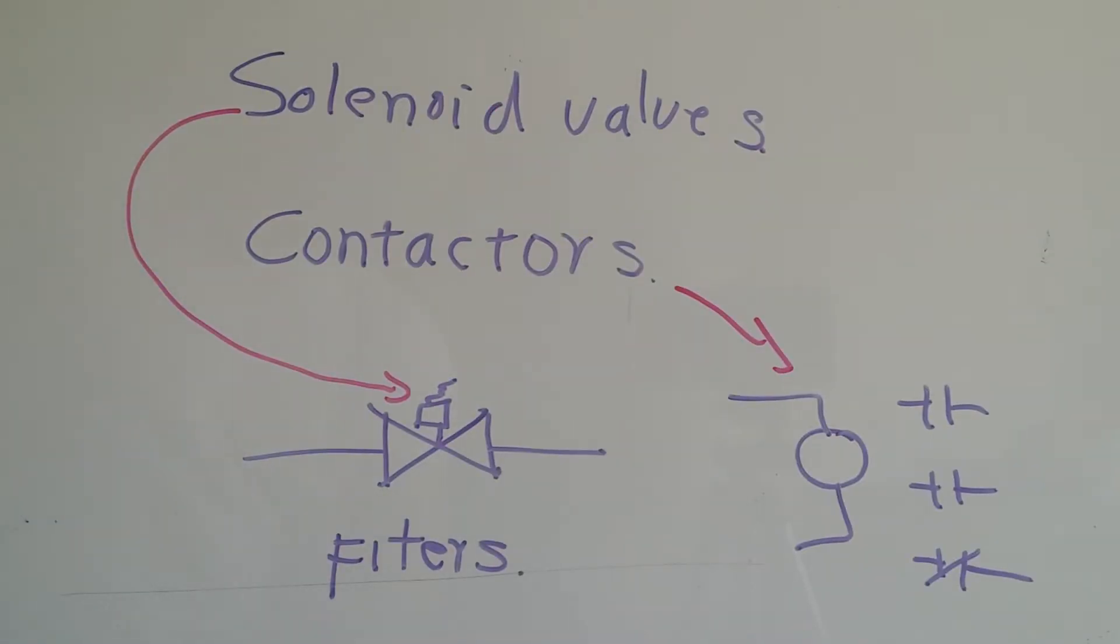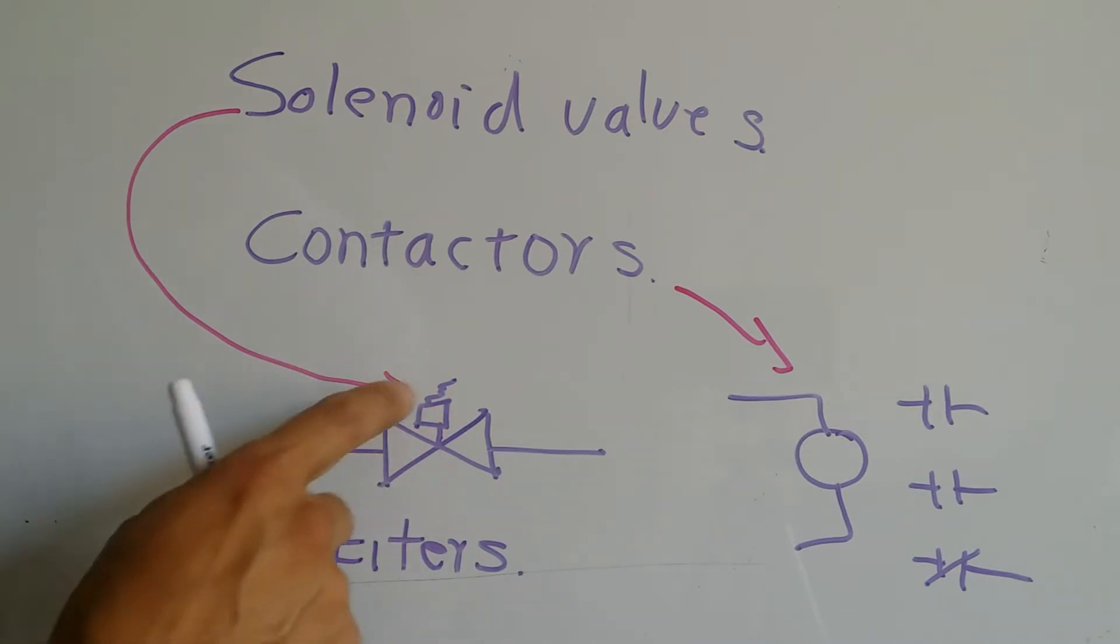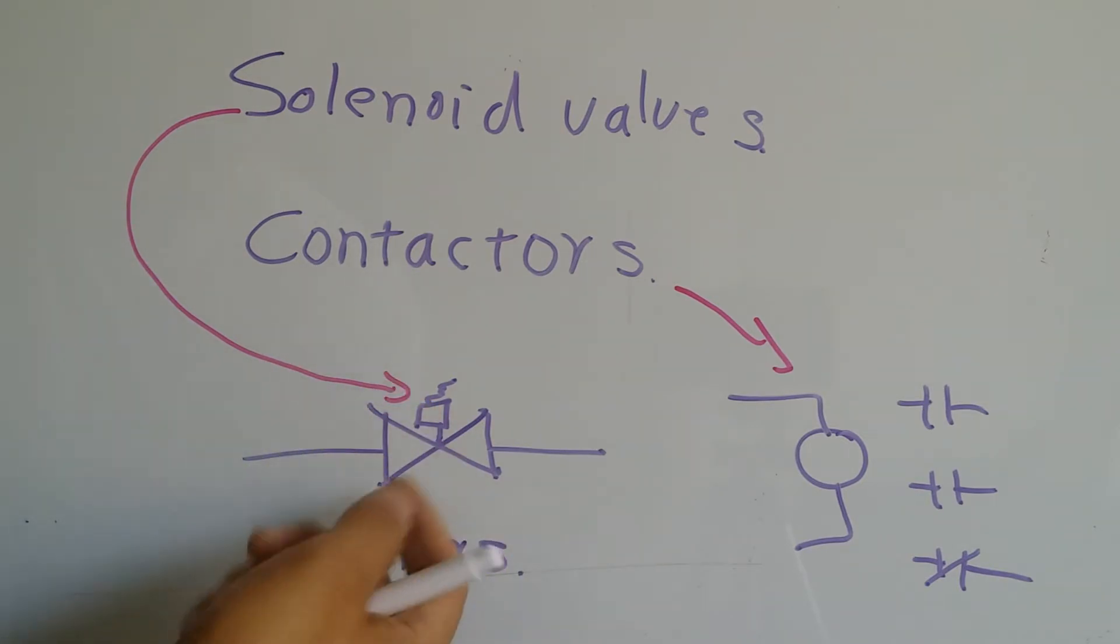As an electrician's mate, the most inductors that you're going to see are going to be solenoid valves, which are water valves or fluid valves that whenever they get energized, they use a magnetic property, but the inductors will create a resistance for it to draw a minimum amount of current.